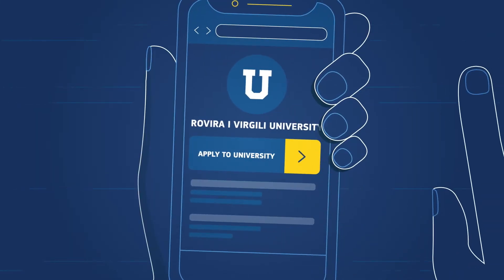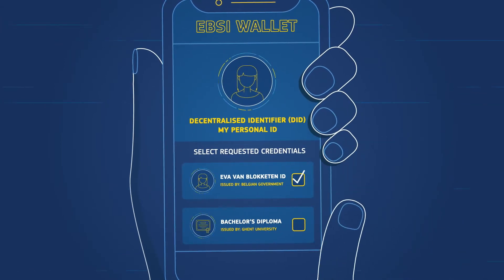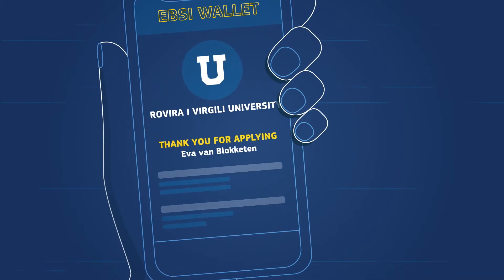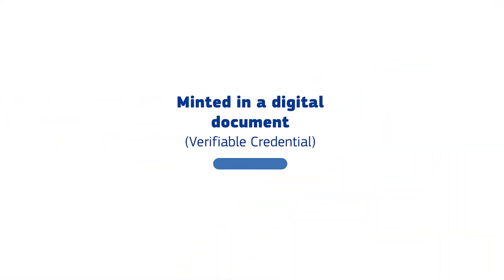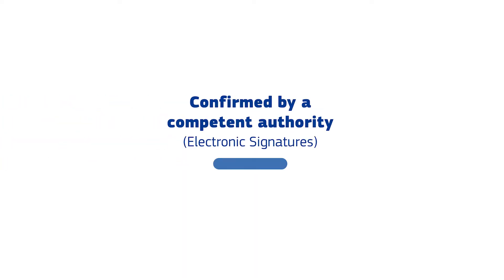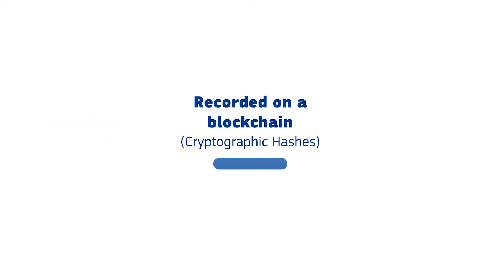In this pattern, official documents or credentials are fundamentally a claim or a set of claims about someone or something. These claims are then minted in a digital document, usually known as a verifiable credential. They're confirmed by a competent authority using electronic signatures, and then they're recorded on a blockchain. The blockchain stores unique cryptographic hashes alongside other key attributes, but it doesn't store the data itself. The verifiable credential can contain claims about the citizen having a given nationality, holding a certain degree, or having a driving license, and they can be verified at any time using cryptographic methods.